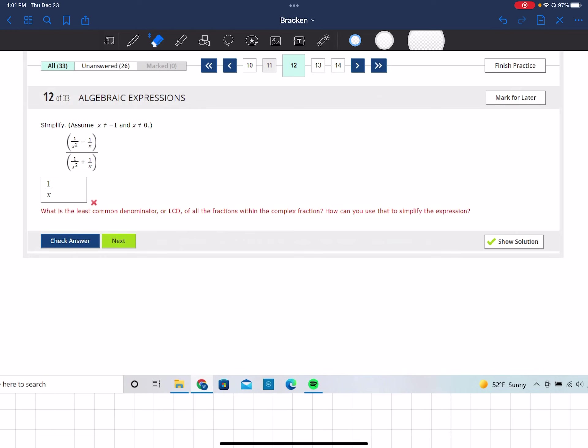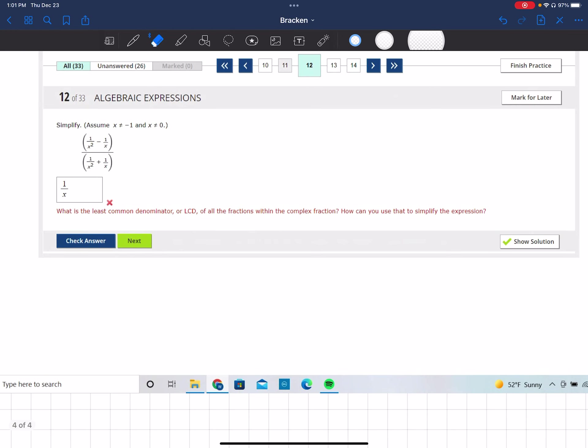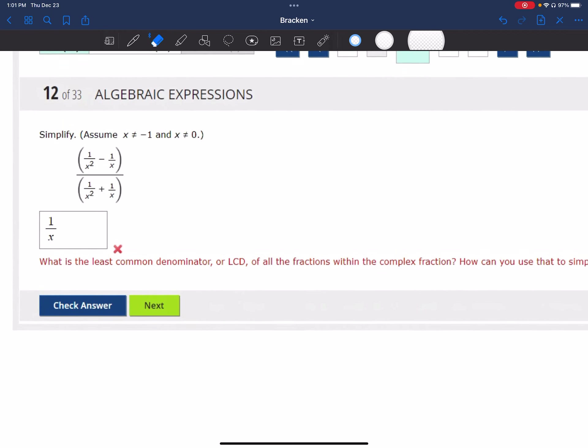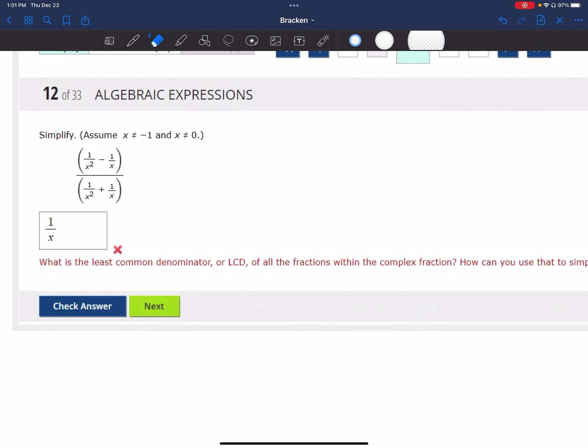Okay, so the first thing I would do is I'm going to look just at the numerator and then just at the denominator and I'm going to find myself a common denominator between 1 over X squared minus 1 over X. I know that common denominator is going to be X squared because I can't really make X squared go down to X.